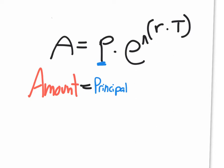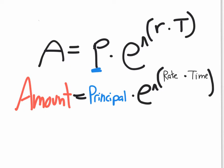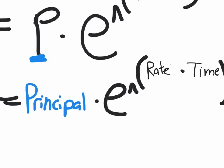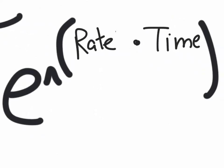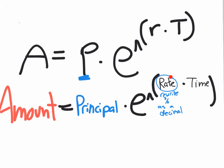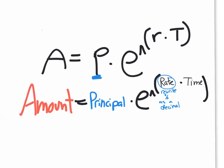E is simply the e button — second LN or shift LN. When you hit that, it opens up the exponent position. In the exponent you have r, which is rate, and t, which is time — so you have rate times time. There is a catch: the rate is given as a percent, but you need it rewritten as a decimal when you type it into your calculator.